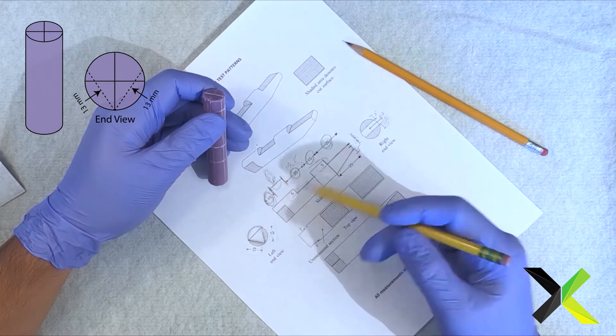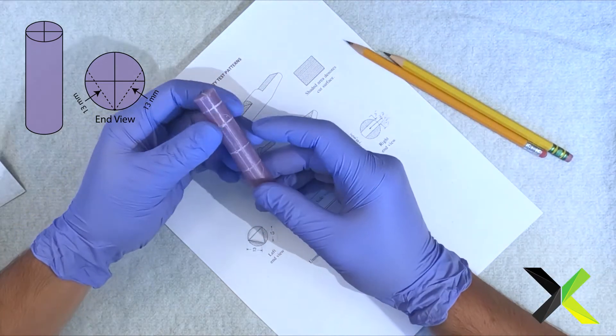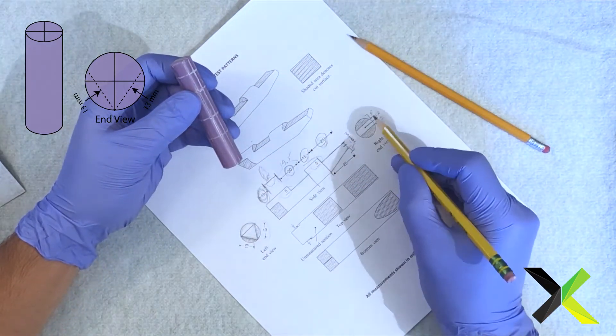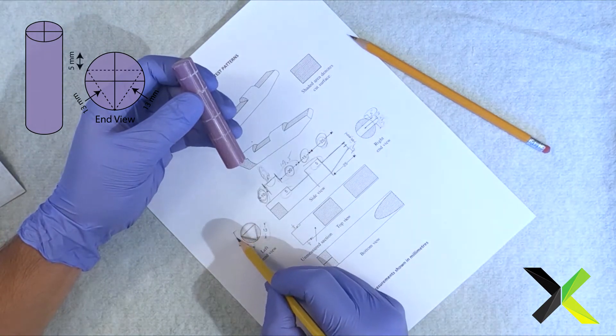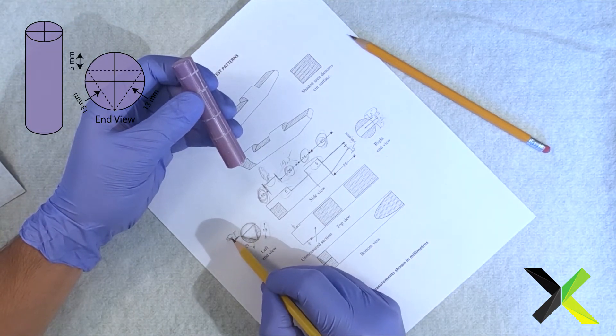But we do want to make these lines, so I'll show you how to do that. The lines that we made, again, this distance is 5. From here to here is 5 millimeters, okay?